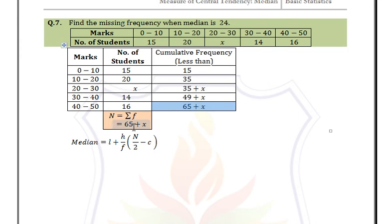Continuing: 49 + X + 16 = 65 + X, which is capital N. To find the median class, we need the cumulative frequency just greater than N/2 = (65 + X)/2. We cannot directly identify this from the table.